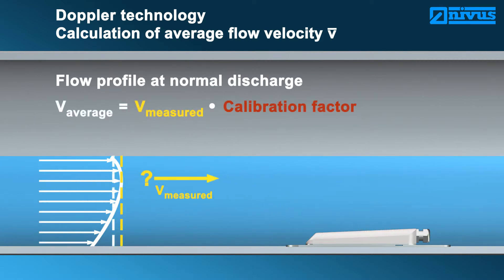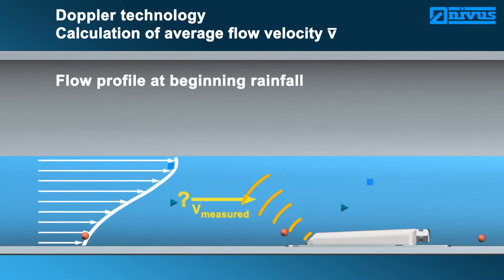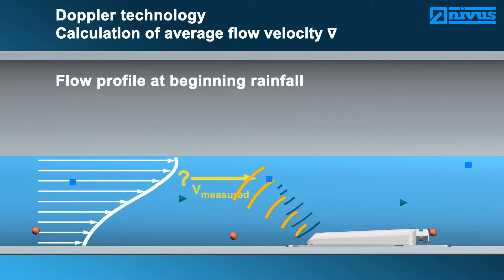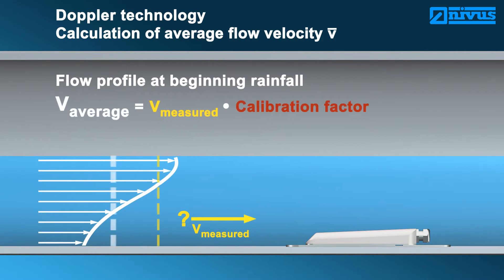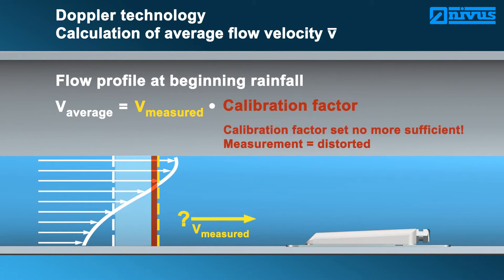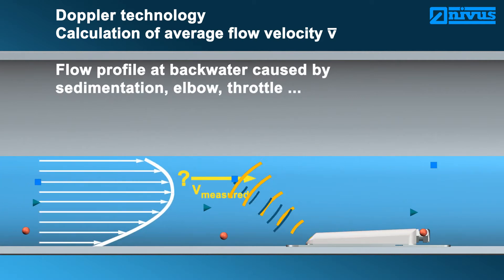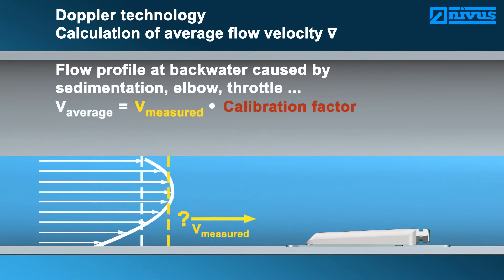To counteract this shortcoming, the average flow velocity is computed with the aid of a calibration factor. This factor must be determined previously, such as by implementing a grid measurement, which is fairly time consuming and expensive. The calibration factor is valid only for one stationary condition. If the flow conditions should change, such as due to rainfall, the flow profile will change accordingly. The originally determined calibration factor hence is no longer applicable and the reading is distorted. The flow conditions will also change in case of backwater formation caused by sedimentation, elbows or throttle equipment, making the original calibration factor no longer valid.